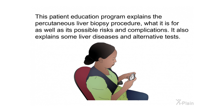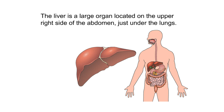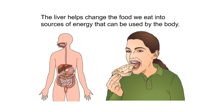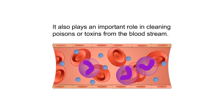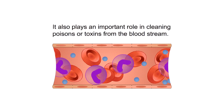Anatomy. The liver is a large organ located on the upper right side of the abdomen, just under the lungs. The liver is a very important organ that does a lot of important things for the body. The liver helps change the food we eat into sources of energy that can be used by the body. It also plays an important role in cleaning poisons or toxins from the bloodstream.